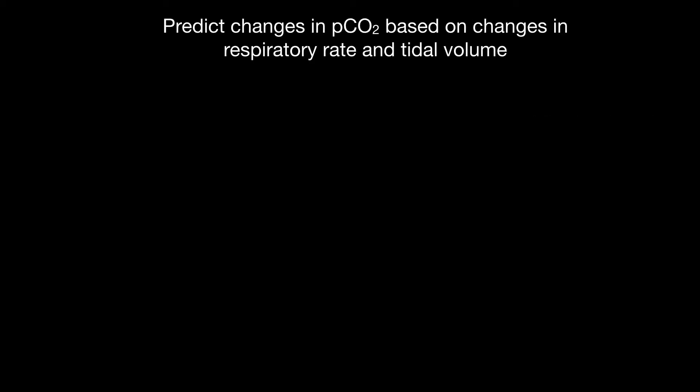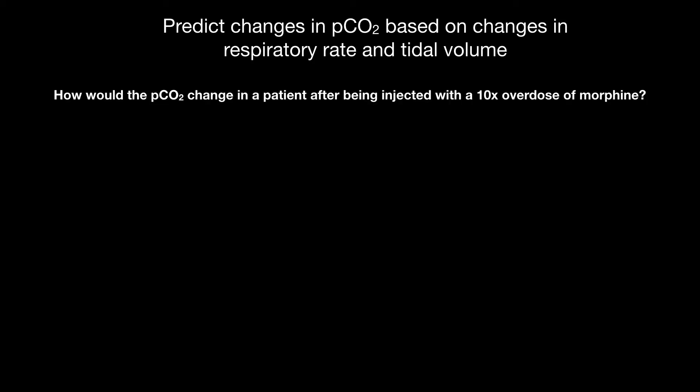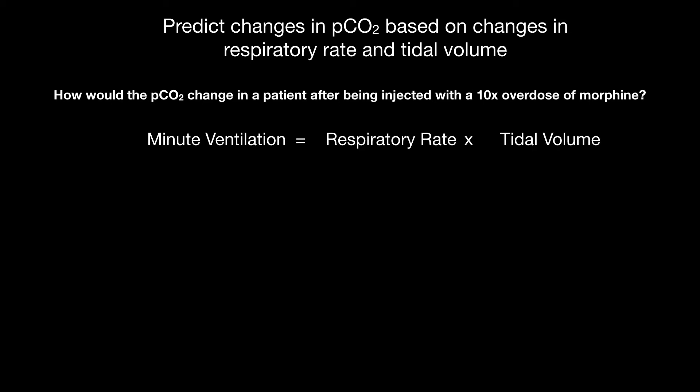Let's predict changes in PCO2 based on changes in respiratory rate and tidal volume using a case. How would your PCO2 change in a patient after being injected with 10 times the normal dose of morphine? Going back to the foundational concept: minute ventilation equals respiratory rate times tidal volume, which includes dead space volume and alveolar volume. Morphine decreases the body's interest in breathing — tidal volumes become more shallow and respiratory rate decreases. Together, it decreases minute ventilation and increases PCO2.